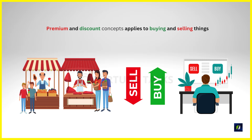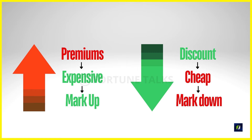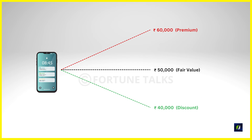Premium and discount are simple concepts that apply to buying and selling things. This includes buying and selling instruments in the stock market or the forex market. Premium means expensive or markup, and discount means cheap or markdown. This is a basic trading principle that can be used in any market, from consumer goods to securities traded through exchanges or even forex. So when you buy something at a premium, it means you are paying more than its fair value. On the other hand, buying something at a discount means you are getting it at a lower price than the actual value. These simple concepts can be applied to various products and assets such as stocks, currency pairs, or even commodities.